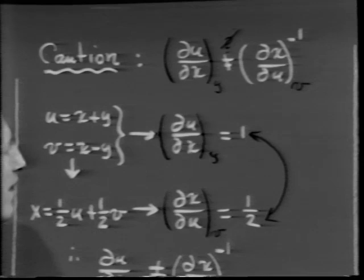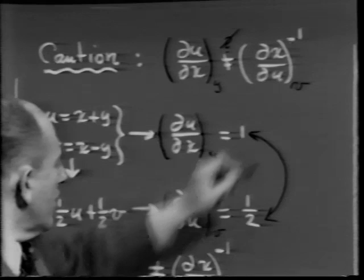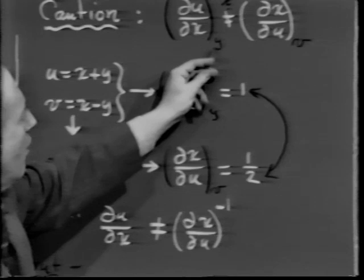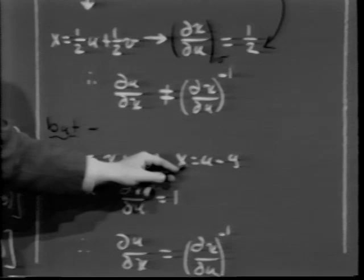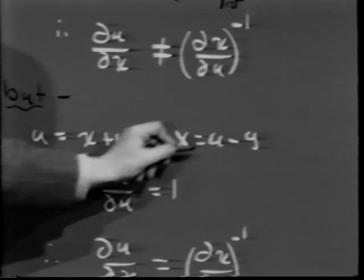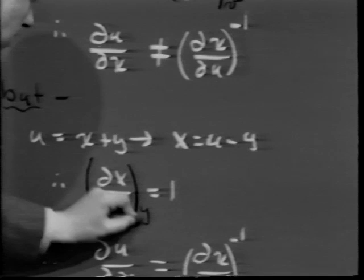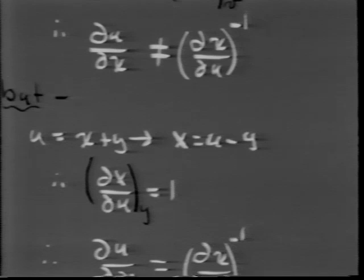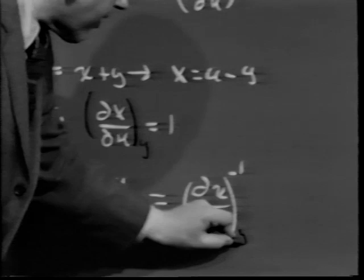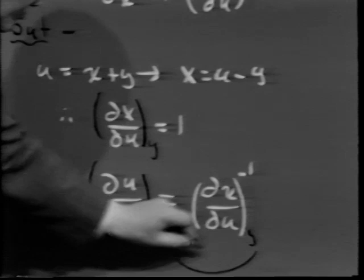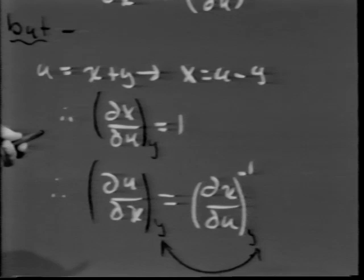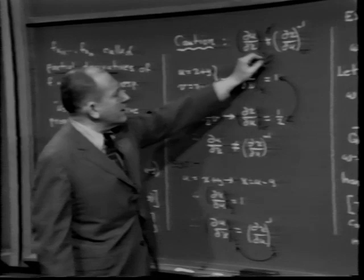The textbook picks the representation where you differentiate u with respect to x holding y constant, and x with respect to u holding v constant — and those held-constant variables are different. I want you to get used to the idea of noting as a subscript which variables are being held constant. When differentiating with respect to x you usually hold y constant; when differentiating with respect to u you usually hold v constant. When variables held constant match up, the reciprocal recipes work.